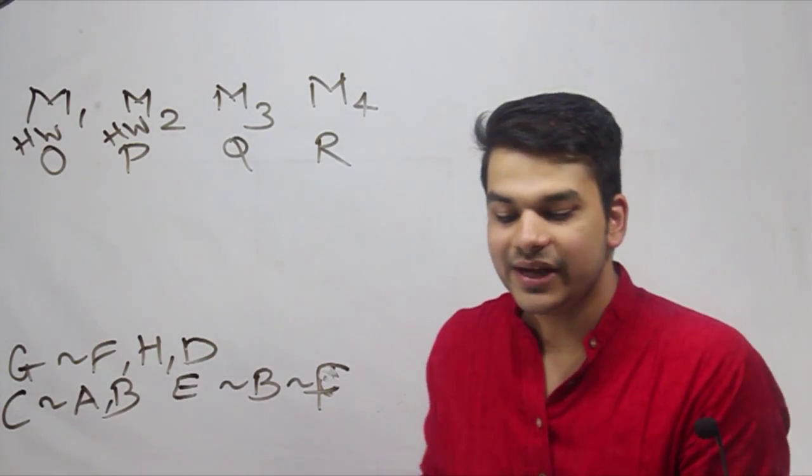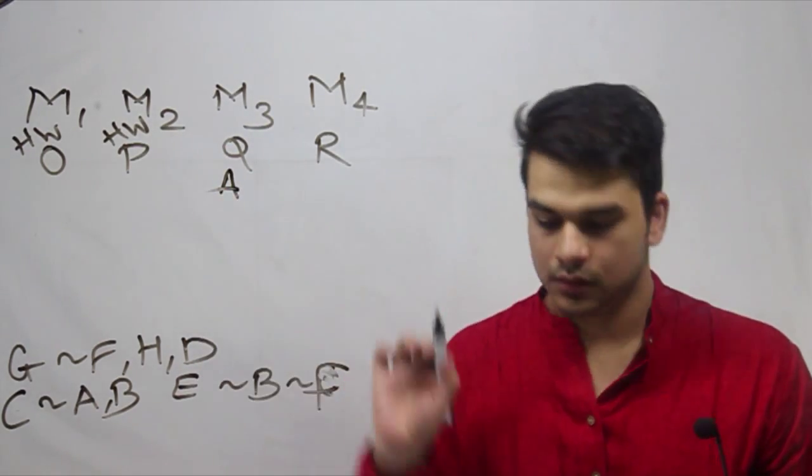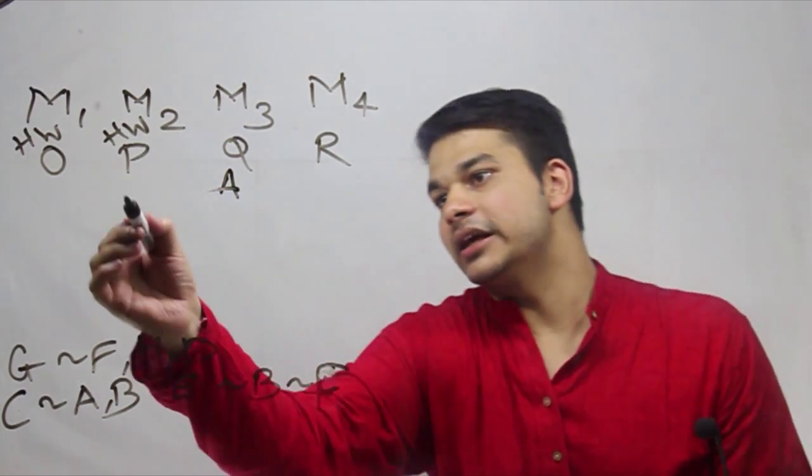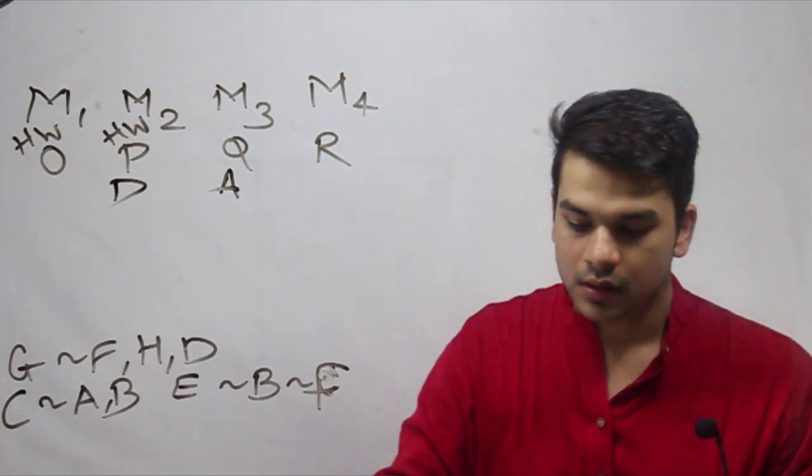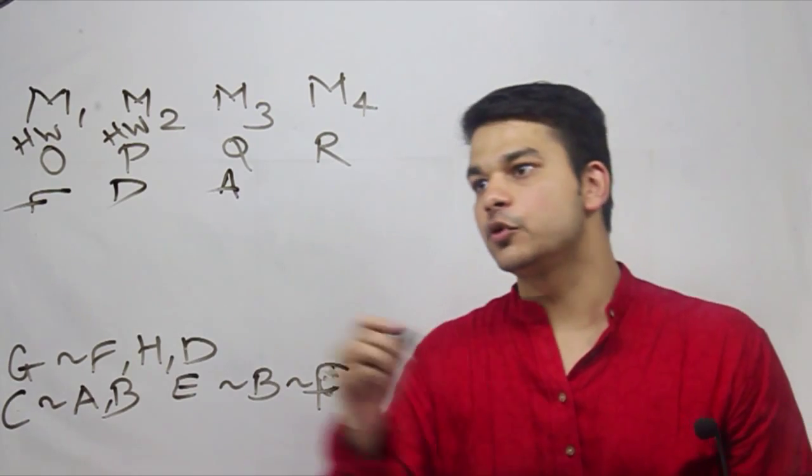Further, it is given that Q is with A, and P is with D, so D will be here. F travels on M1, and E travels on M2.